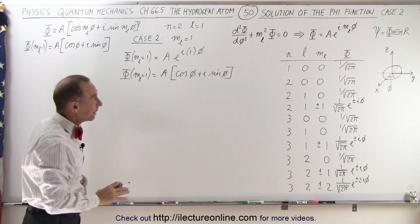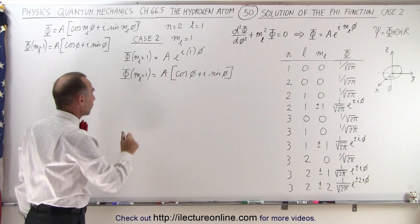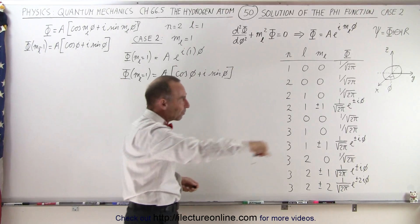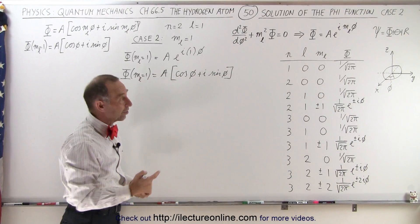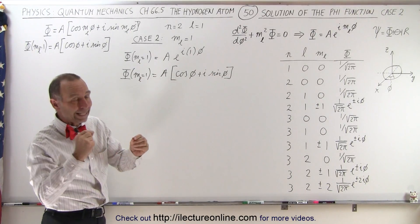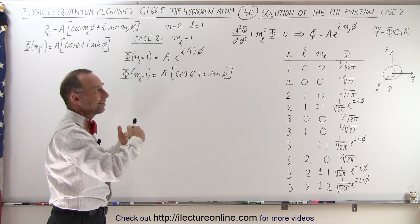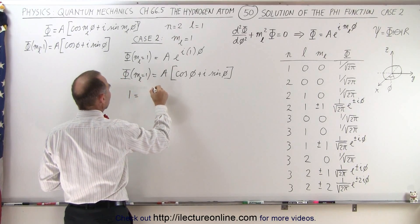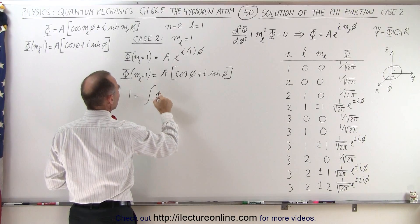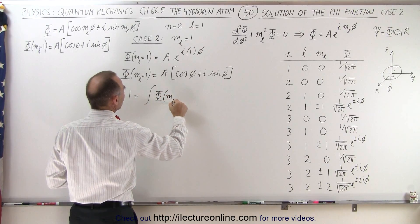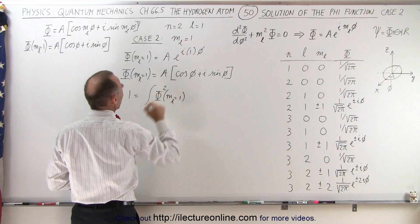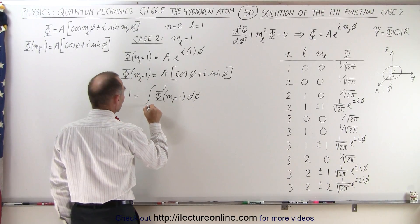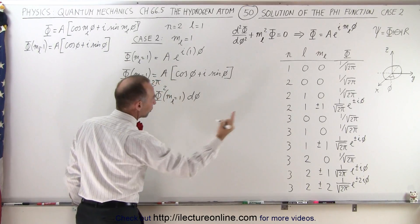Now, how do we find the value for A? We have to use a normalization technique where we integrate over the entire azimuth direction and set that complete integral equal to 1. We know that the total probability of where the electron can be in the azimuth direction in the hydrogen atom must equal 1. So we say that 1 must equal the integral of the function squared, with m sub l equal to 1, integrated in d·phi from 0 to 2π, because we want to go all the way around the circle.